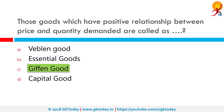Goods which have a positive relationship between price and quantity demanded are known as Giffen goods. In economics and consumer theory, a Giffen good is a product that people consume more of as the price rises, violating the basic law of demand. For most goods, as price rises, the substitution effect makes consumers buy less. But a Giffen good is so strongly an inferior good that the income effect more than offsets the substitution effect, and the net result of a price rise is increased demand.